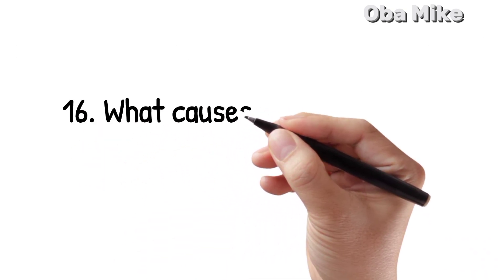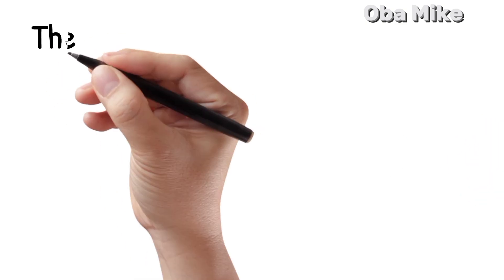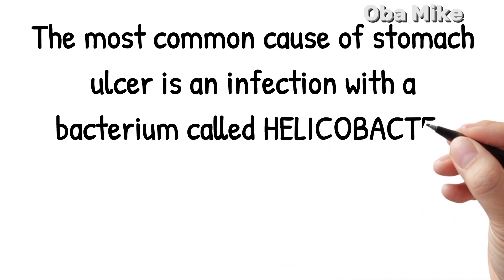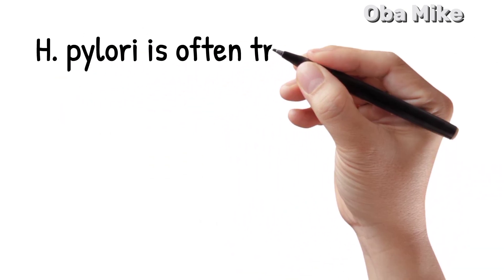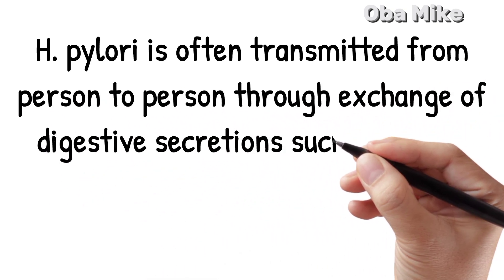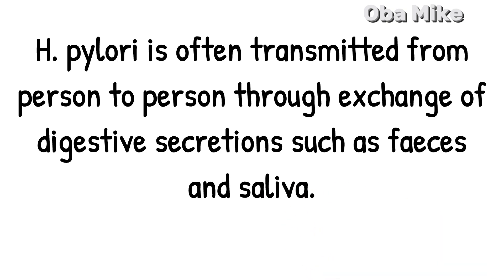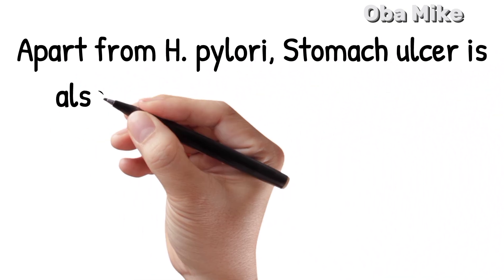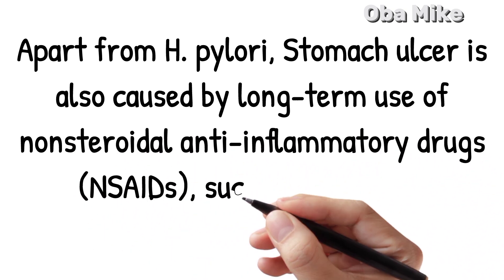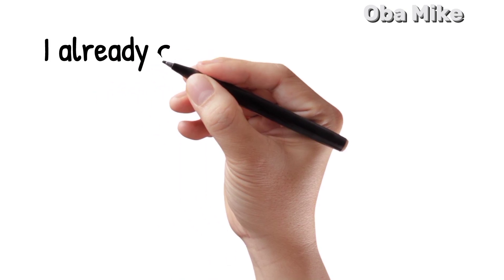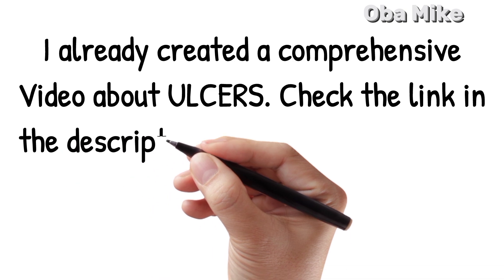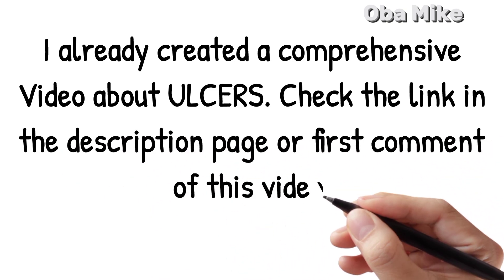Number 16. What causes stomach ulcer? The most common cause of stomach ulcer is an infection with a bacterium called Helicobacter pylori. H. pylori is often transmitted from person to person through exchange of digestive secretions such as feces and saliva. Apart from H. pylori, stomach ulcer is also caused by long-term use of non-steroidal anti-inflammatory drugs such as ibuprofen. I already created a comprehensive video about ulcers. Check the link in the description page or pinned comment of this video to watch it.